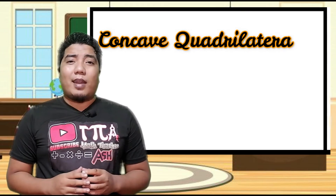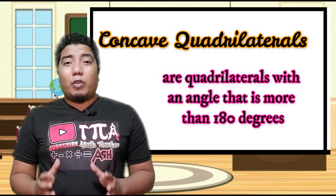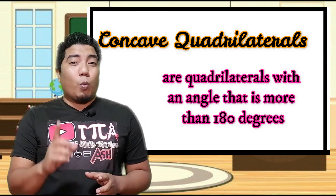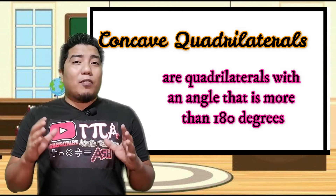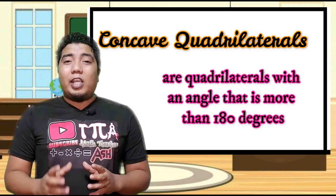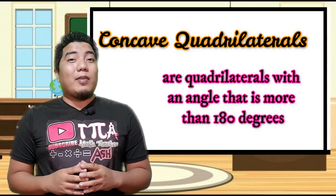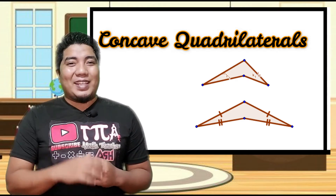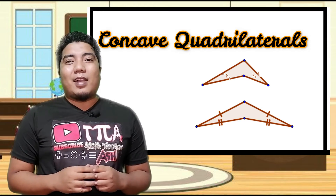How about concave quadrilaterals? Concave quadrilaterals are those that have at least one reflex angle, meaning one of the interior angles is more than 180 degrees. A concave quadrilateral looks like this. How about convex quadrilaterals? Convex quadrilaterals are those we see normally in our day-to-day lives.